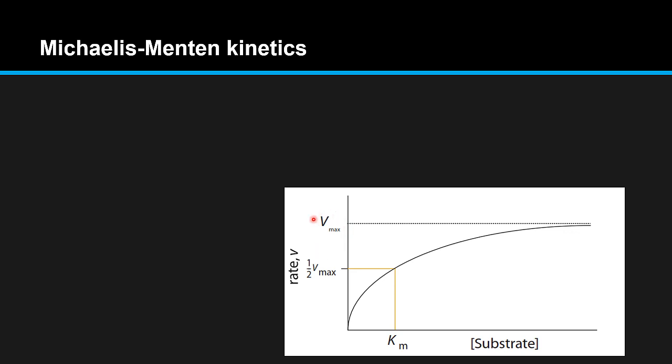Looking at the graph, we have Vmax which is the maximum velocity, and we have Km which is the Michaelis constant.